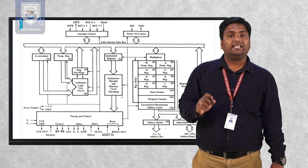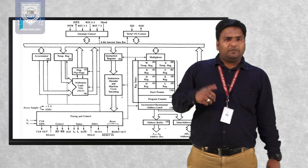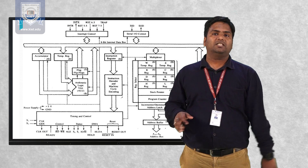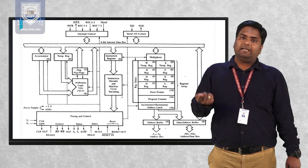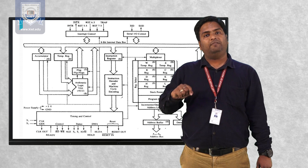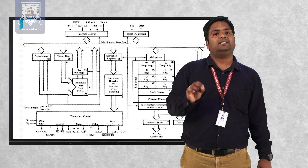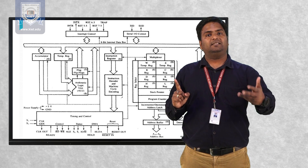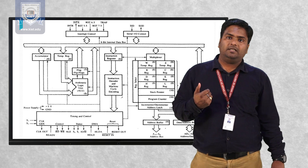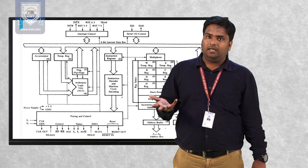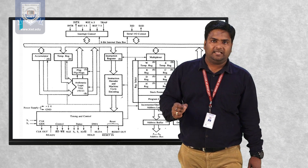There is also a flag register of 8 bits that contains a total of 5 flags. A flag is basically a status bit — if the value is 0, that flag is off; if it is 1, that flag is on. The first flag is the sign flag, which represents whether the number is positive or negative. The next is the zero flag — if we perform subtraction between A and B and both are equal, the result is 0, which is indicated by the zero flag.